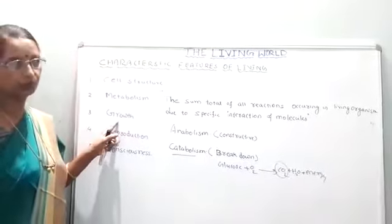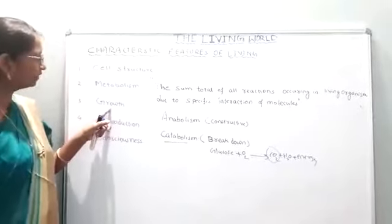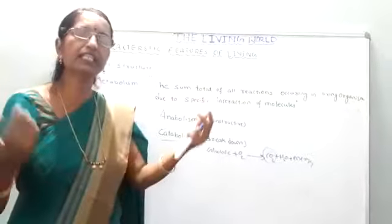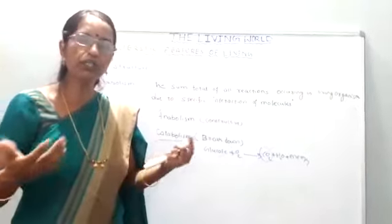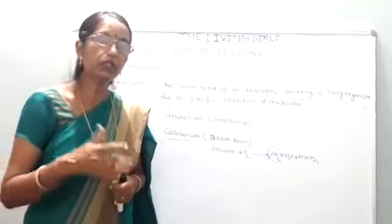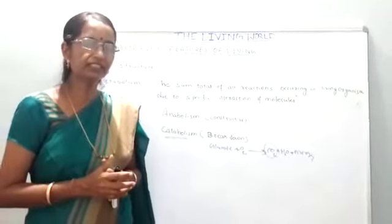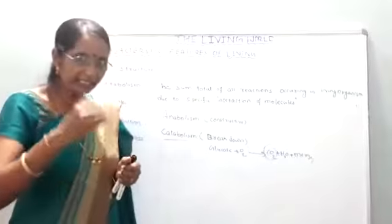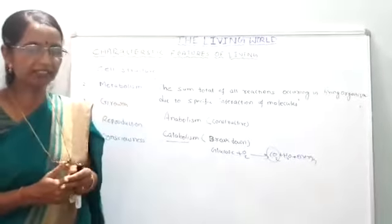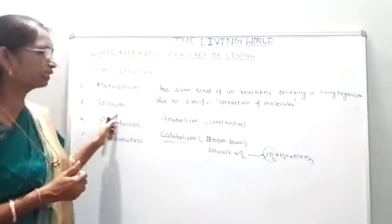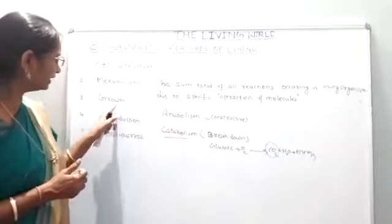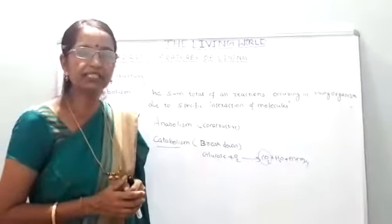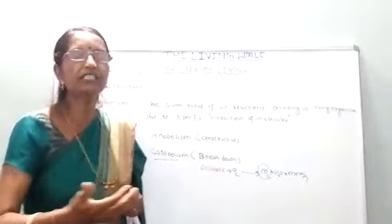Next characteristic feature is growth. Growth is simply defined as an increase in the size of the organism. Growth is a permanent, irreversible process. As a result of growth, the increase in the size of the organism takes place, or increase in the biomass of the organism takes place.